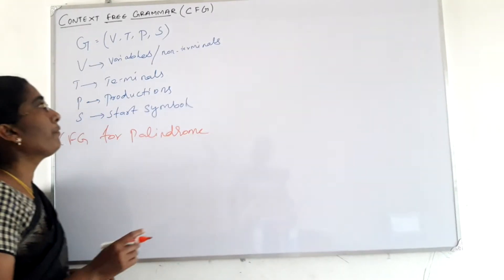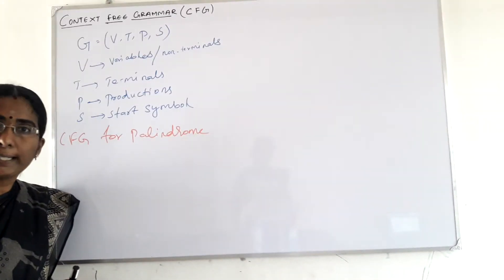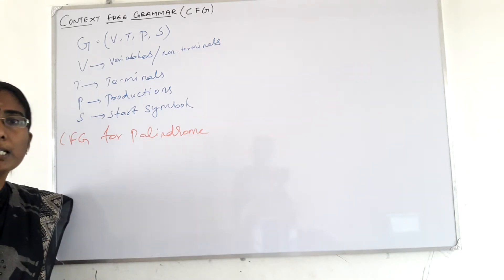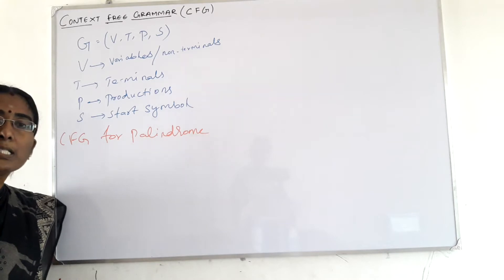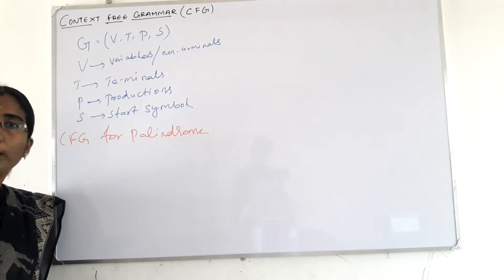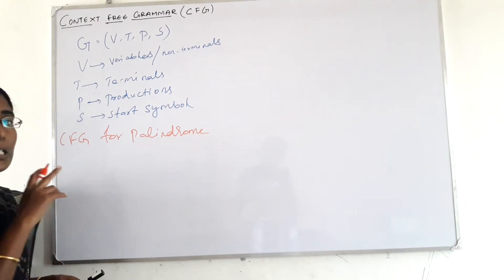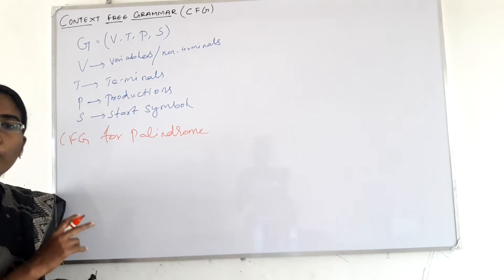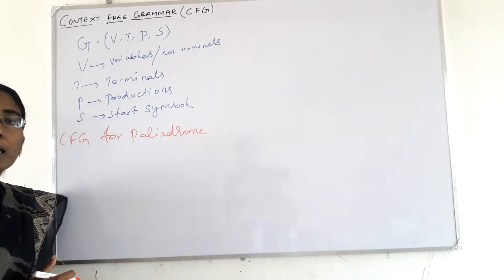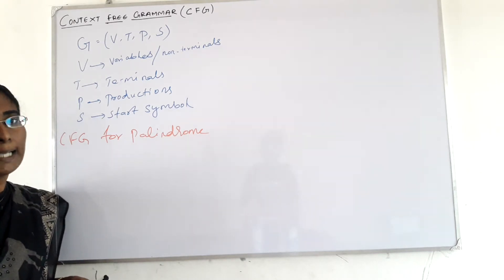Variables can be represented by using only uppercase letters. All terminals are represented by using lowercase letters. Numbers — 0, 1, 2, 3 — and epsilon all come under the terminal category. Variables use uppercase letters; terminals consist of lowercase letters, numbers, and epsilon.